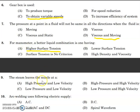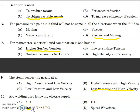Steam leaves the nozzle at high velocity. Whenever we go for high velocity, automatically it will be low pressure — so low pressure and high velocity is the answer. The last question: arc welding uses the following electric supply — AC and DC. Both AC and DC are used, so the answer is both AC and DC.